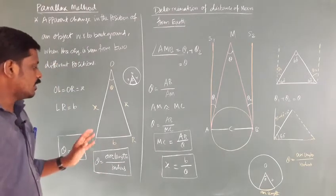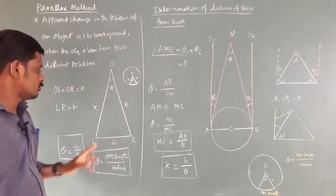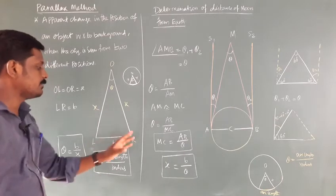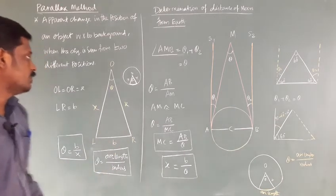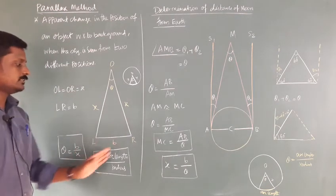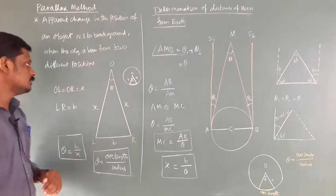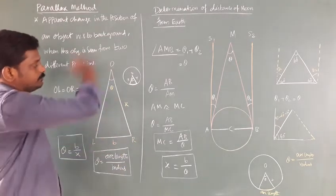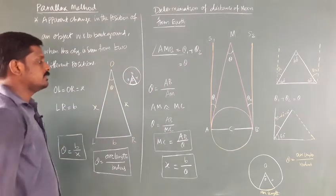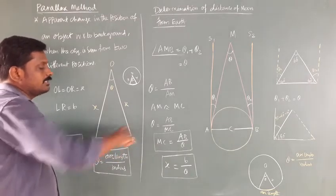Now I am seeing an object placed at point O, from two points L and R — L is left, R is right. The distance between the two points of observation is the basis. It makes an angle theta. O is the center of the circle, and OL and OR are the radii. The basis LR is the arc length of the circle.